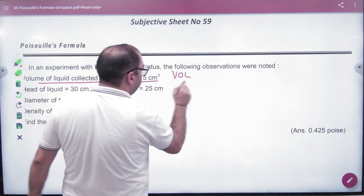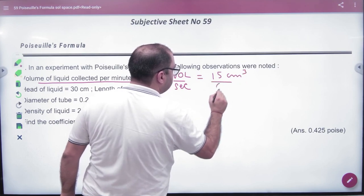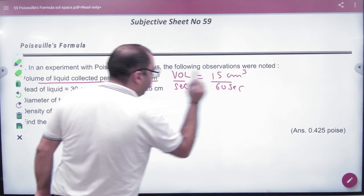So what is given? Volume flowing per second. What is it? 15 cm³ upon 60 seconds. Next.